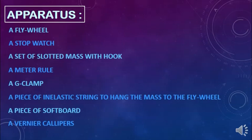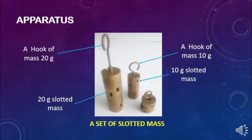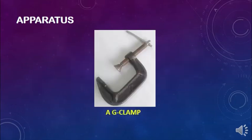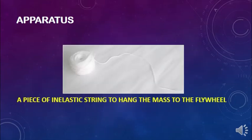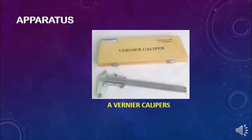The apparatus for setting up this experiment are: a flywheel, a set of slotted masses, a stopwatch, a meter roll, a G-clamp, a piece of inelastic string to hang the mass to the flywheel, a piece of softboard, and a vernier calipers.